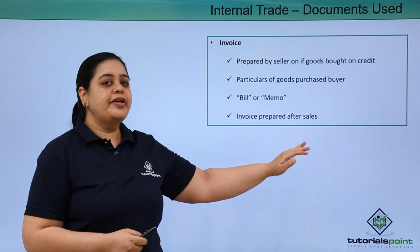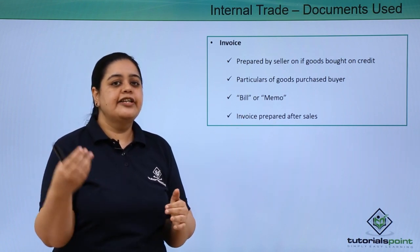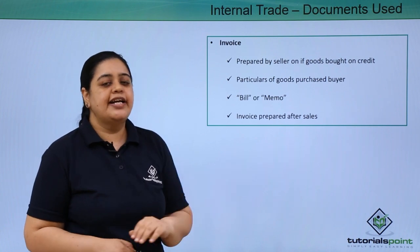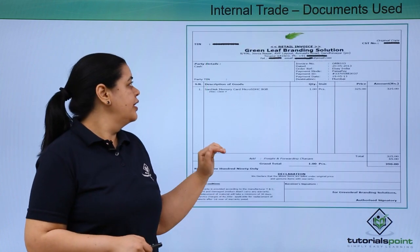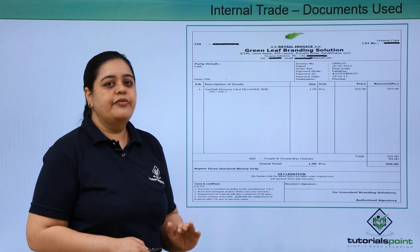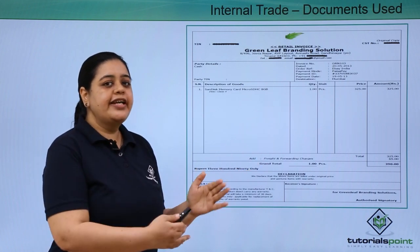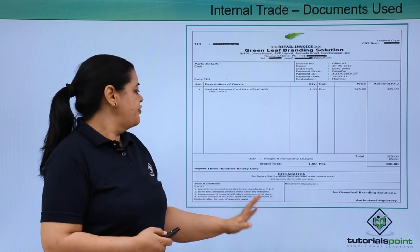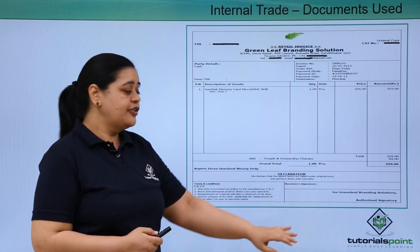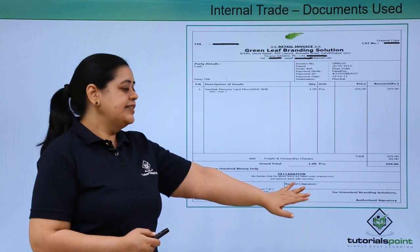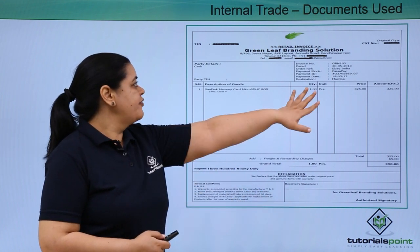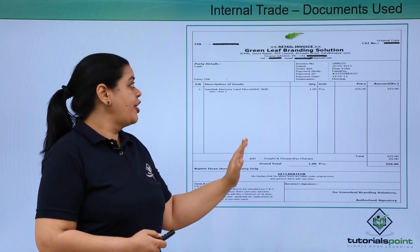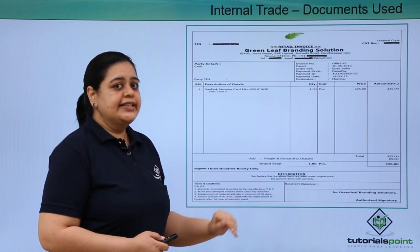The invoice is also known as a bill or memo. Remember, this is prepared after the sale. When it comes to the performa invoice, it is prepared before the sale happens, but the invoice is done after the sale. Here is a sample showing how the invoice is prepared, with all the details and a declaration by the seller about the goods, including the date and other required details.